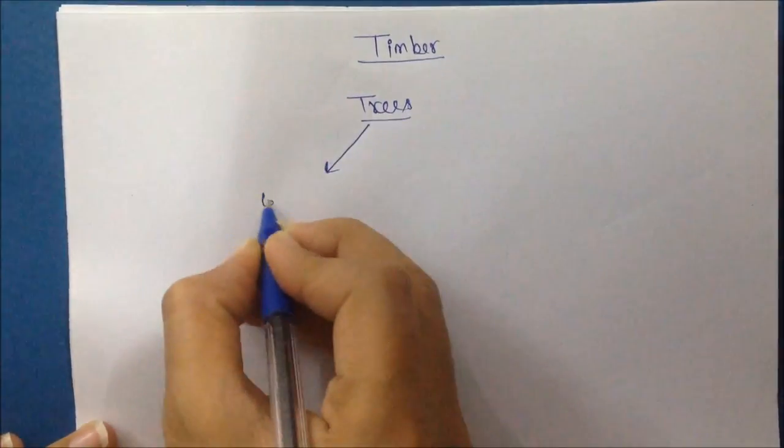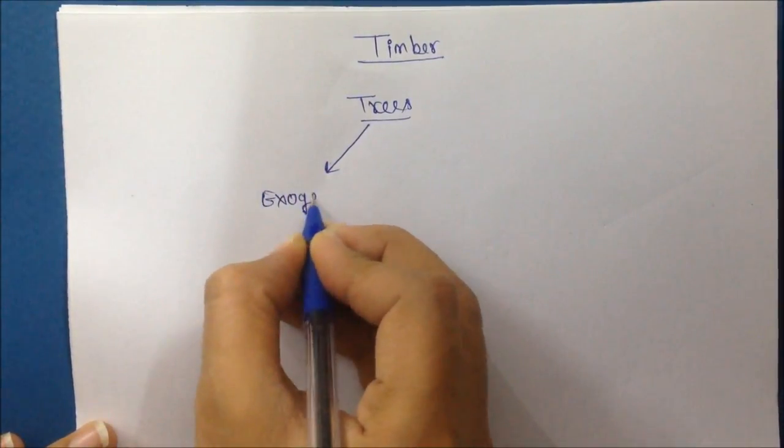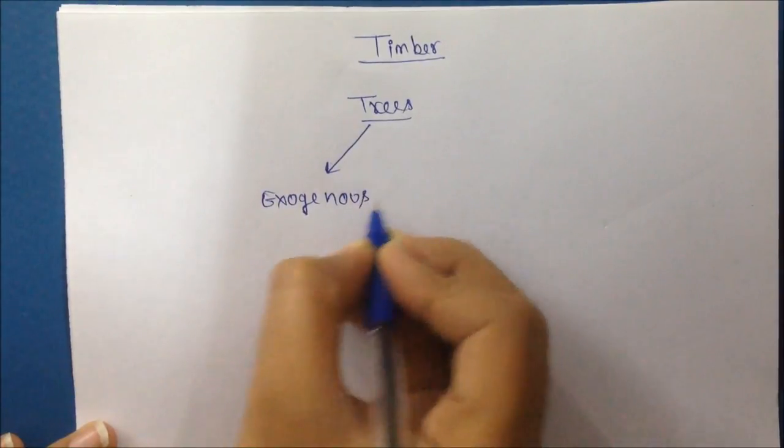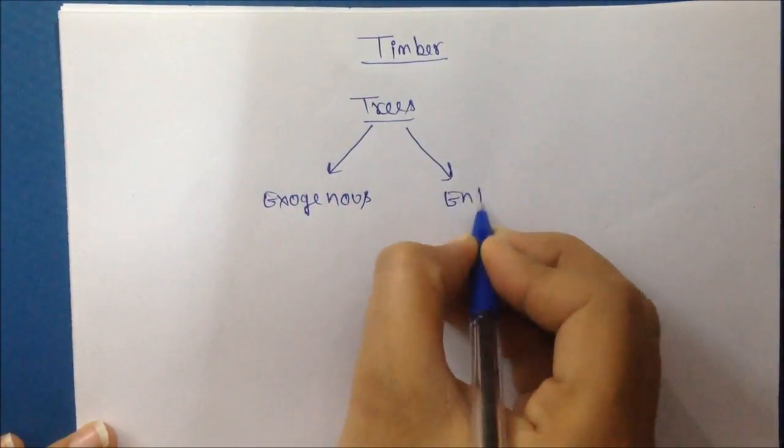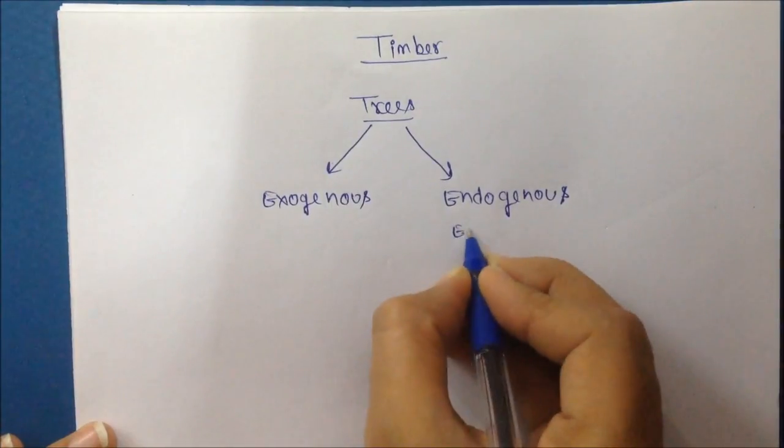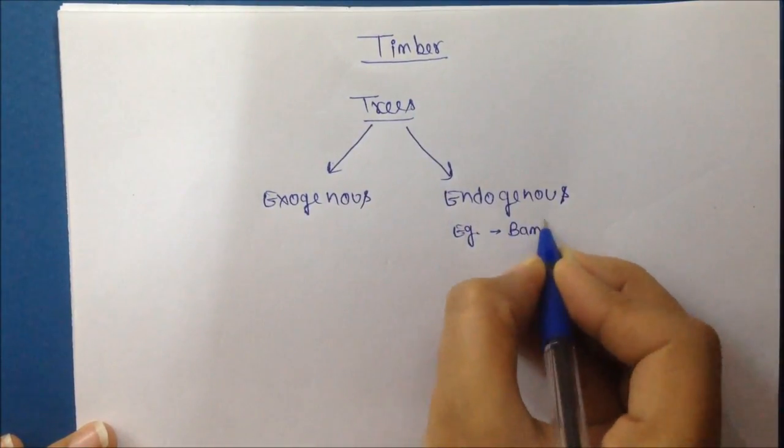It can be classified in two parts. First is exogenous trees. Exogenous trees are those growth in outward direction and endogenous trees are those growth in longitudinal direction or in height direction.